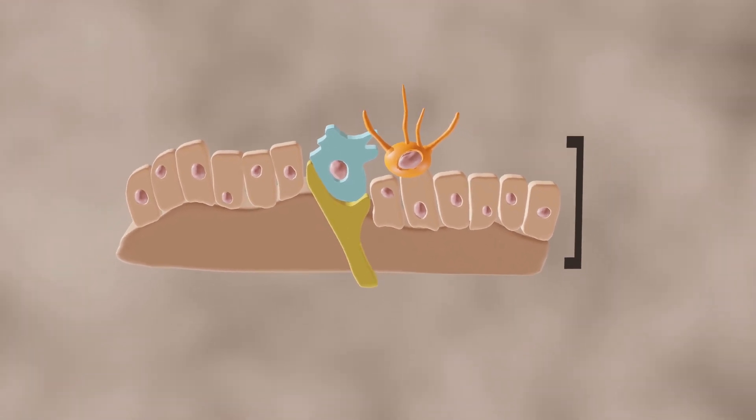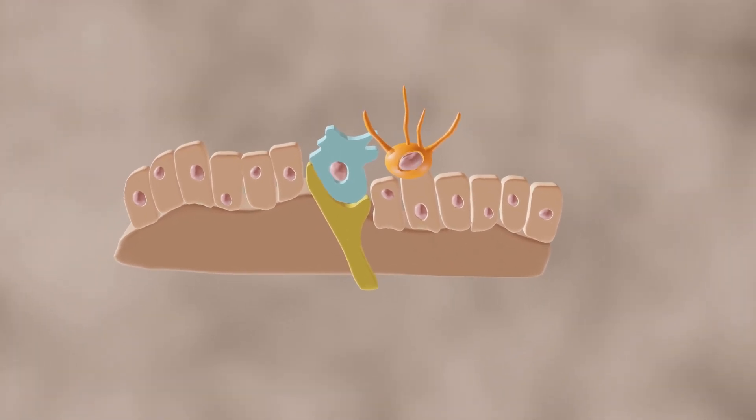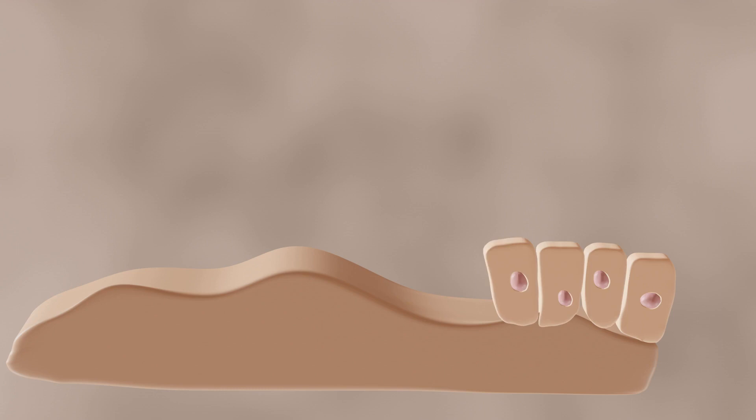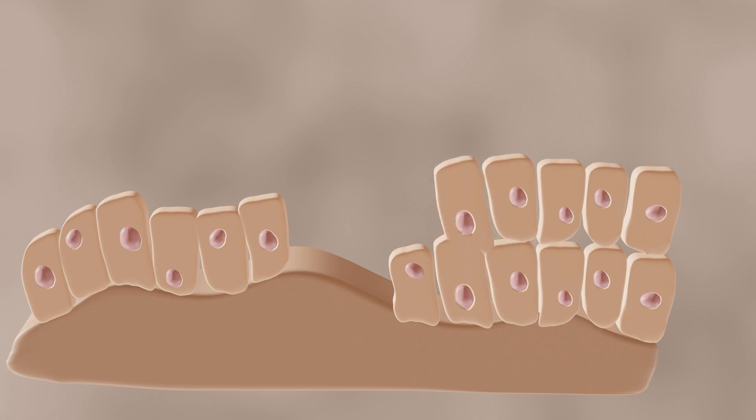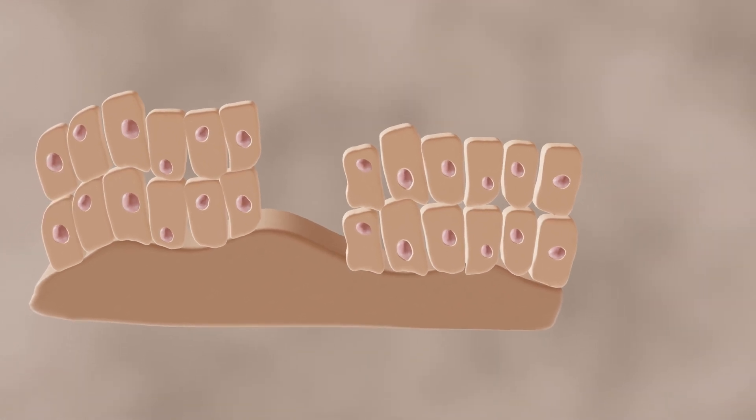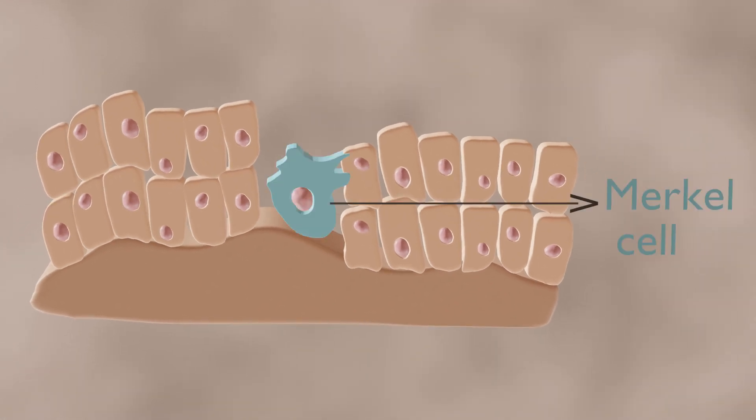Stratum basale is the innermost layer of the epidermis and contains small round cells called basal cells. The basal cells continually divide, and new cells constantly push older ones up toward the surface of the skin, where they are eventually shed. Merkel cells, which are tactile cells of neuroectodermal origin, are also located in the basal layer.